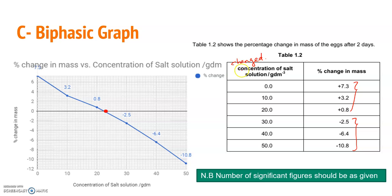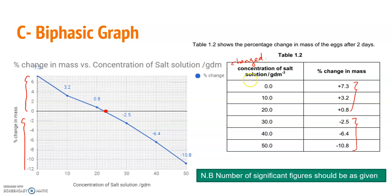The factor that is changed — the concentration — is placed on the x-axis, going from 0 to 50 in steps of 10. On the y-axis, there are positive values going upward and negative values going downward. For example, the positive side reaches 7.3 and the negative side goes to negative 10.8.